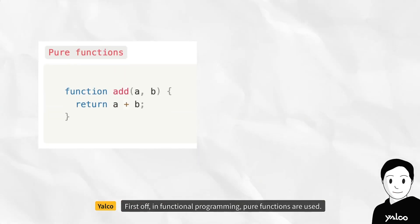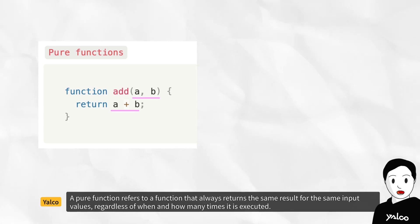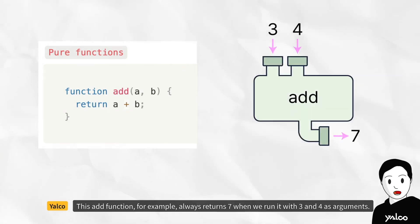First off, in functional programming, pure functions are used. A pure function refers to a function that always returns the same result for the same input values, regardless of when and how many times it is executed. This add function, for example, always returns 7 when we run it with 3 and 4 as arguments.